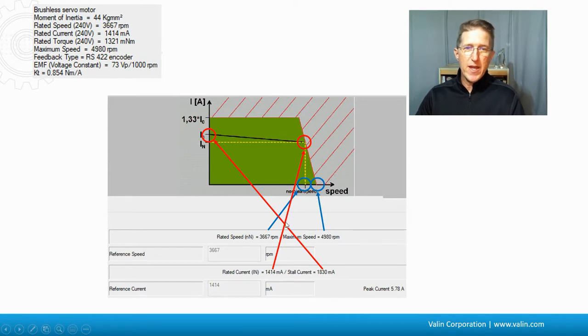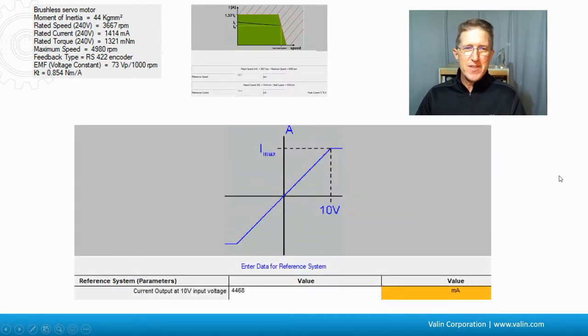Are you talking about the rated current? Are you talking about the stall current? Are you talking about the rated speed or the maximum speed when expecting what you want to get out of it, as well as configuring it?